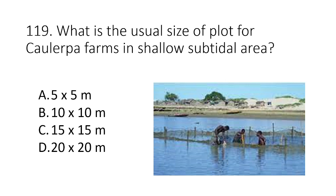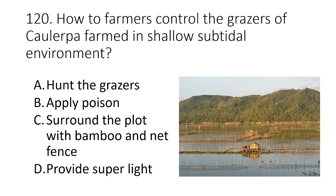Question 119. What is the usual size of plot for Caulerpa farms in shallow subtidal areas? A. 5x5 m B. 10x10 m C. 15x15 m D. 20x20 m. The answer is D. 20x20 m.